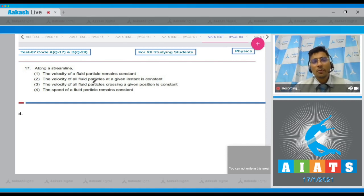Among these the third option is correct which says that the velocity of all fluid particles crossing a given position is constant. In a streamline motion when a particle crosses a given point in space its velocity is same. That is at a given point in space all the particles crossing that point have same velocity. This makes option number 3 for this question the correct answer.